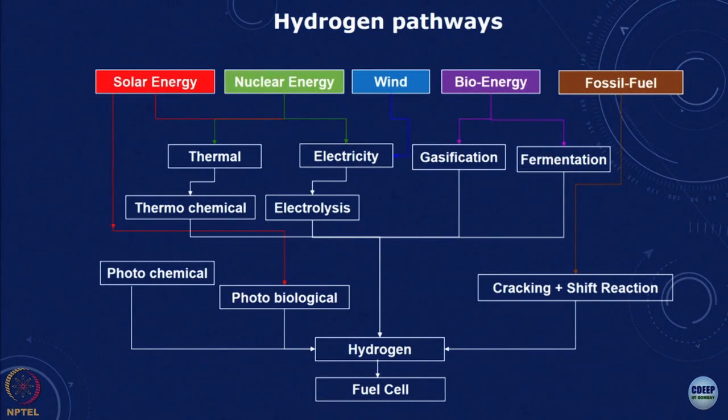With this we complete the pumping example. Now we look at another example: comparing a fuel cell based car with an IC engine based car. Hydrogen is considered a secondary fuel, and many researchers believe it is the future. Hydrogen can be produced from a variety of sources.